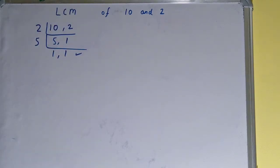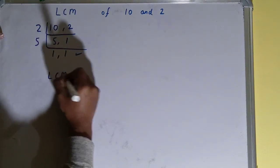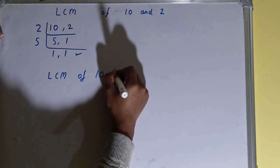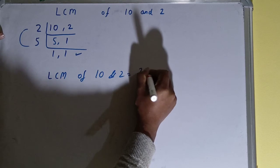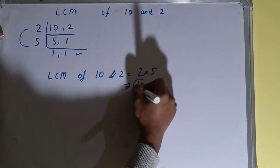Now we do one last thing: LCM of 10 and 2 equals multiply whatever you have got on the left-hand side. That is 2 cross 5. The answer will be 10, or the LCM will be 10.